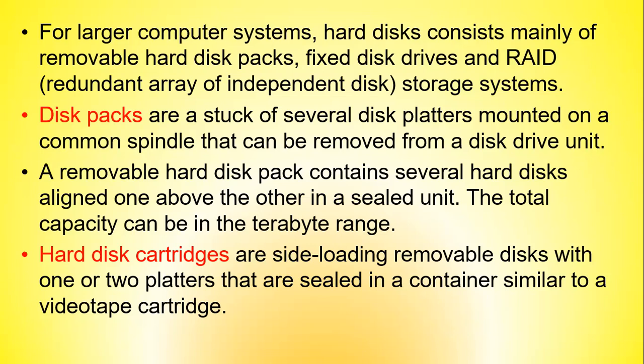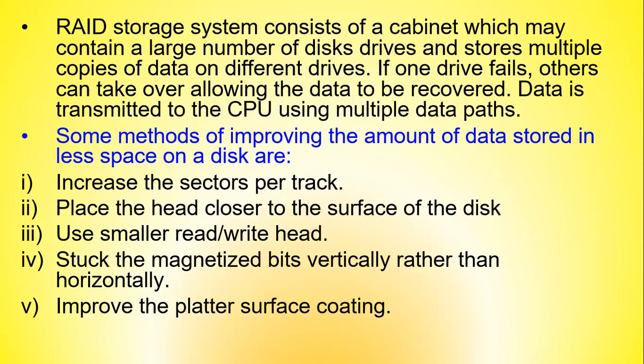Disk packs are a stack of several disk platters mounted on a common spindle that can be removed from a disk drive unit. A removable hard disk pack contains several hard disks aligned one above the other in a sealed unit, and the total capacity can be in the terabyte range. Hard disk cartridges are side-loading removable disks with two or more platters sealed in a container similar to a videotape cartridge. The RAID storage system consists of a cabinet containing a large number of disk drives that stores multiple copies of data on different drives; if one drive fails, others take over allowing data to be recovered.